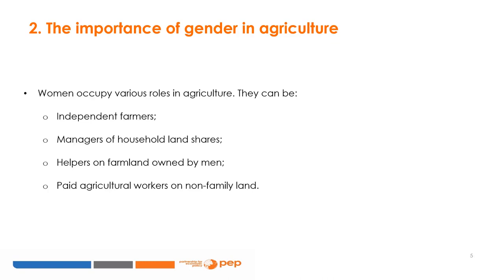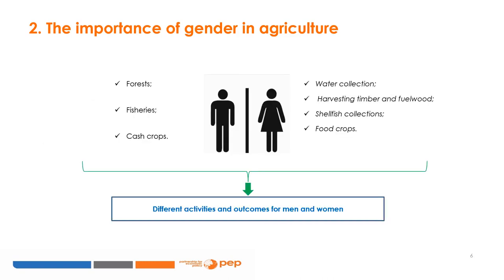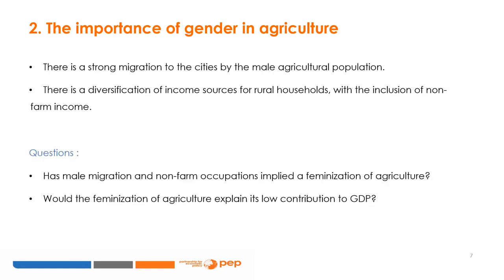Women can also be helpers on farmland owned by men, paid agricultural workers, or farmers on non-family land. If men are more present in forestry, fisheries, and cash crop activities, women are more present in water collection, harvesting of timber and fuel wood, collecting shellfish, and food crop activities. Increasingly, a strong migration of the male agricultural population to cities can be observed, alongside a diversification of sources of income of rural households with non-farm income. This raises the question: has male migration implied a feminization of agriculture, and does this explain agriculture's low contribution to GDP?